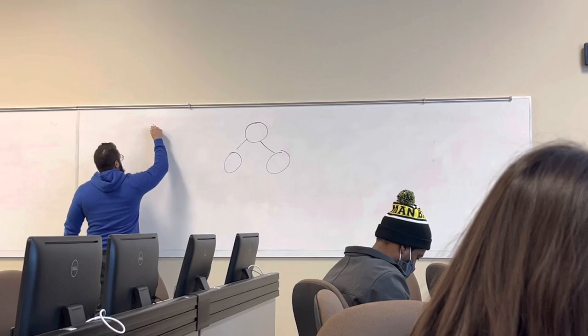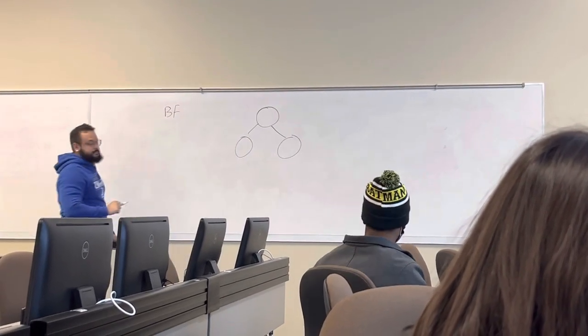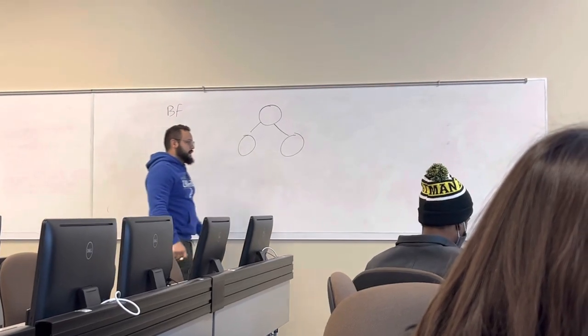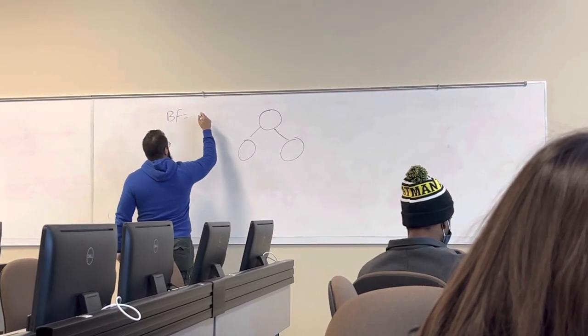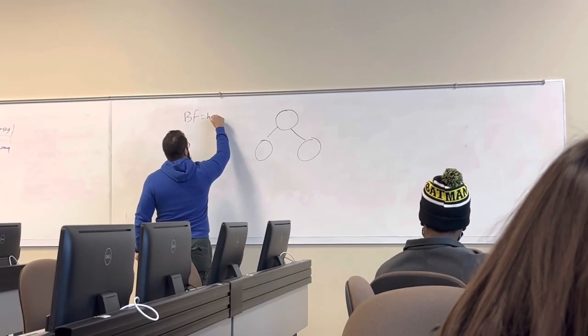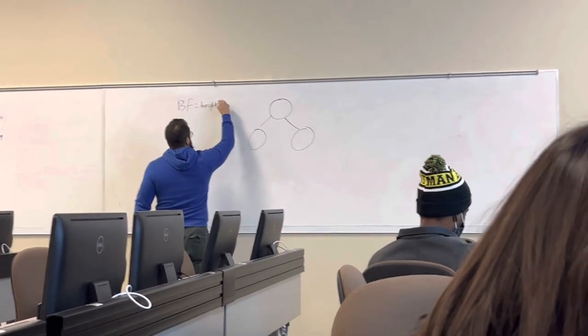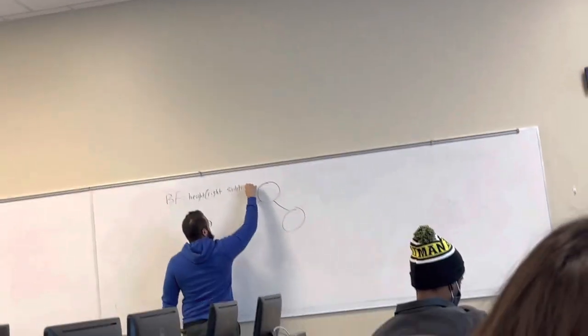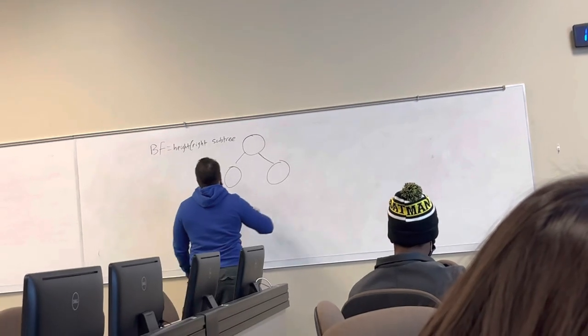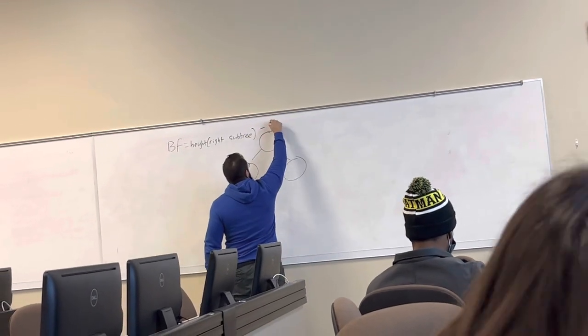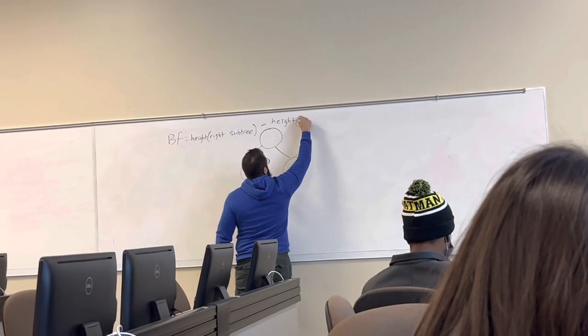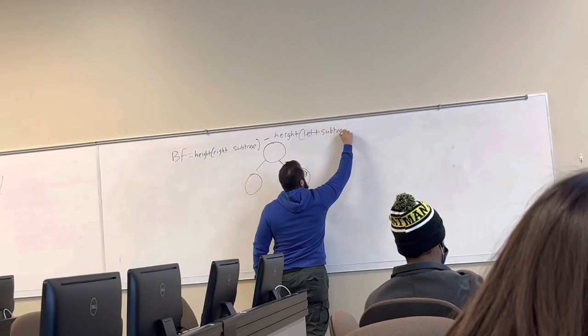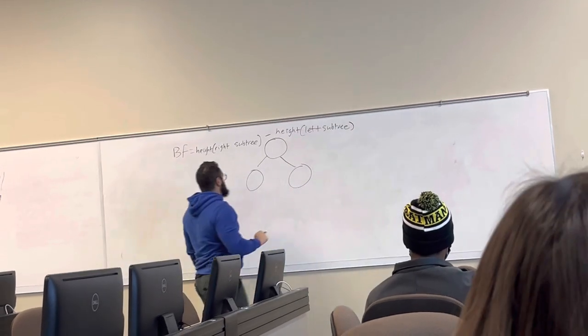And that's AVL trees require something called the balancing factor for every single node. So, balancing factor, I'm just going to write it as BF, but balancing factor. Every single node has this. Balancing factor is equal to the height of your right subtree minus the height of your left subtree. That's the balancing factor.